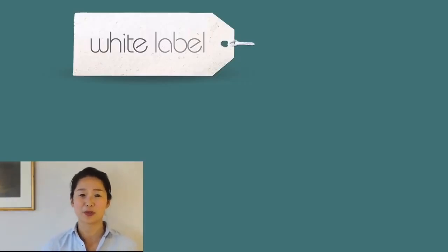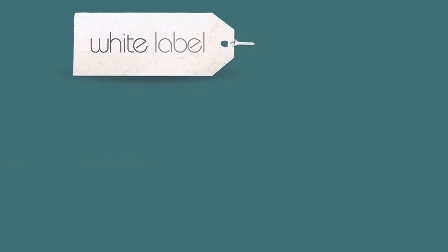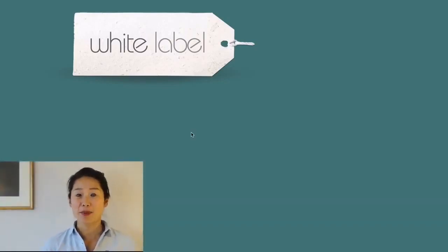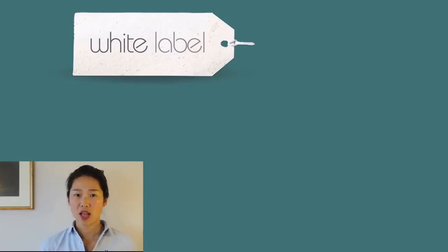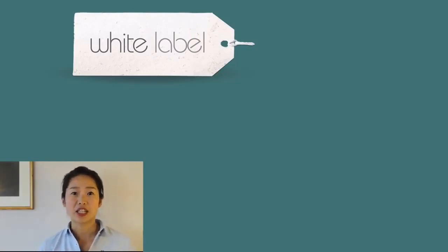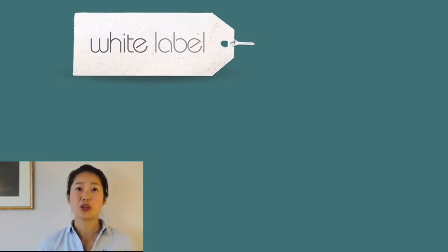Another monetization strategy is white labeling. For example, if a gym wanted an app with features like booking classes and updating membership details, those features aren't unique to one gym — every gym would need them. So you build it for one gym, then reskin the app with custom branding and color palette, and sell it to another gym and another. You develop once and sell many, many times. This works well if you have contacts or domain knowledge in a particular niche and want to build apps as templates to resell again and again.